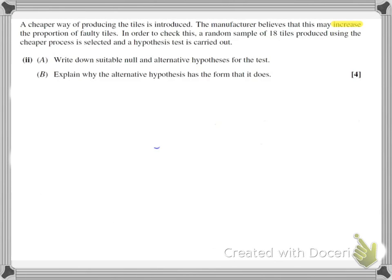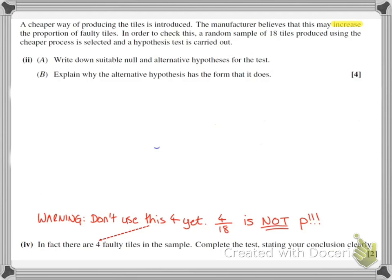We now move on to the hypothesis testing part. A cheaper way of producing the tiles is introduced, and the manufacturer believes this may increase the proportion of faulty tiles. A random sample of 18 tiles produced using the cheaper process is selected and a hypothesis test is carried out. A word of warning: the data about 4 faulty tiles comes up in part 4 later, and some people would say the probability is 4 out of 18 and use that in their hypothesis — but that's not what the hypothesis test is about.